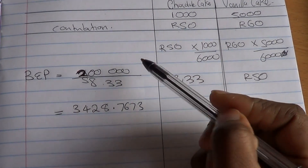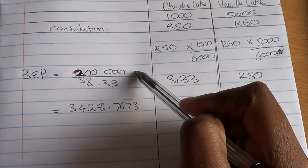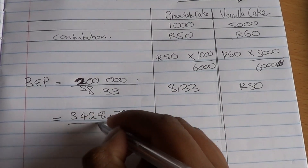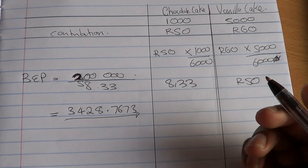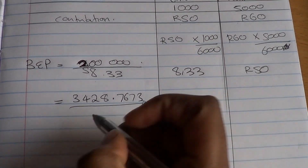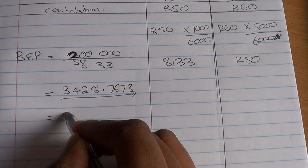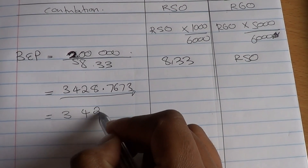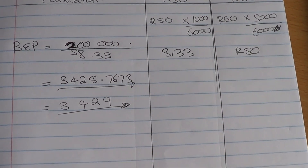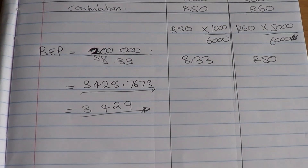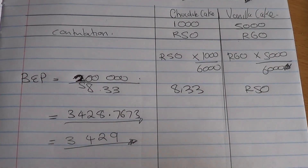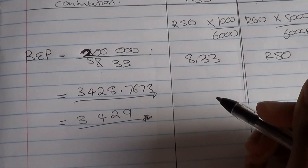In my calculation of break-even point, I made my total fixed cost 200,000 rand because it gave a more realistic answer. So I came to 3,428.76 units. And there's always a mark for rounding up because you can't have half a product or a quarter of a product. So you always round up when you're calculating break-even points — it's quite helpful to remember this.